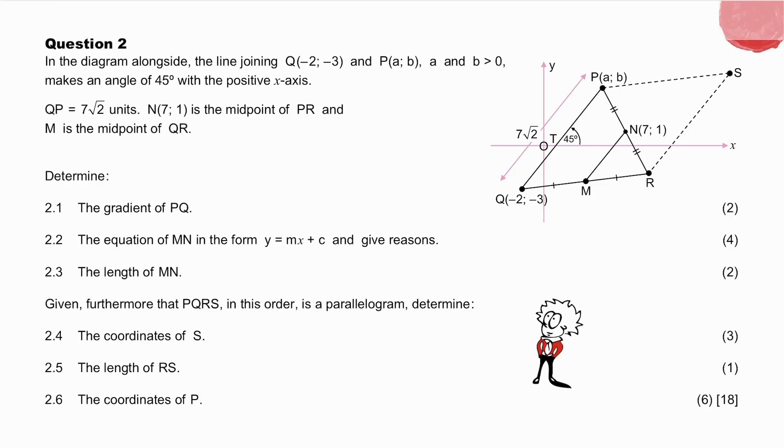For the gradient of PQ, you have the angle of inclination. For the equation of MN, you have a point, and you know that parallel lines have equal gradients. The length of MN is simply half the length of PQ. And for PQRS to be a parallelogram, we need to consider the properties of a parallelogram while working out the coordinates of S, a vertex of the parallelogram, and the length of RS. And then finally, the coordinates of P. There are two unknowns, A and B. Therefore, we need two equations in A and B. Think formulae. Pause while you do these questions.